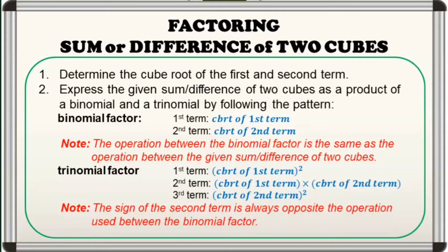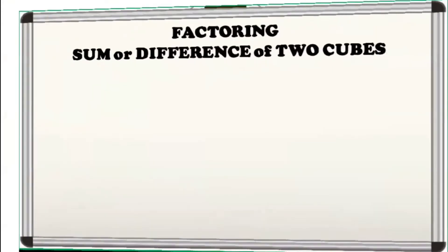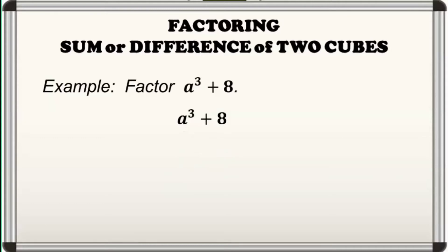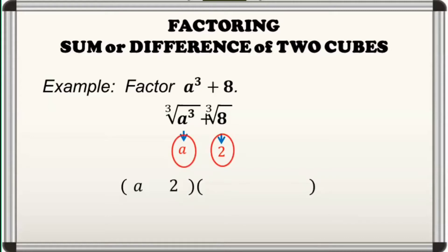Medyo mahaba-haba ang steps, kaya isimplify natin through these few examples. Let's factor out a cubed plus 8. Ito ay isang sum of two cubes, since a cubed is equal to the cube of a, and 8 is equal to the cube of two, and they are separated by a plus sign. So, we proceed in factoring it out. Ang cube roots ng first and second terms ay a at two respectively, at sila ang gagamitin natin to form our binomial and trinomial factor. For our binomial factor, we have a and two, separated by a plus sign, since the given is a sum of two cubes.